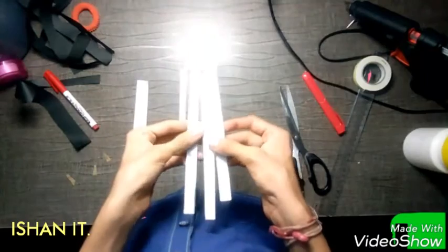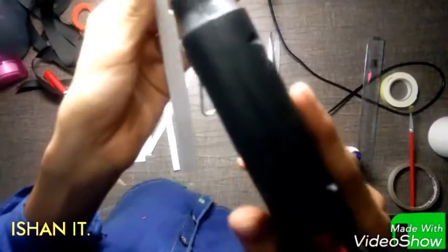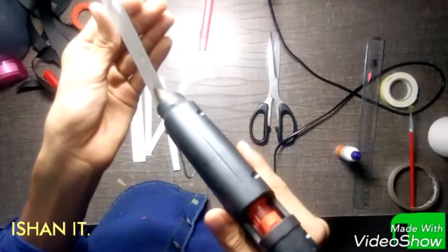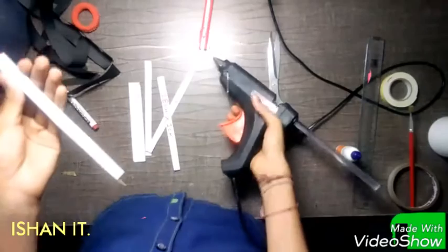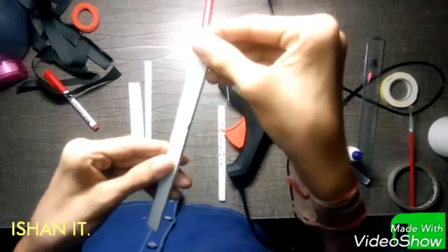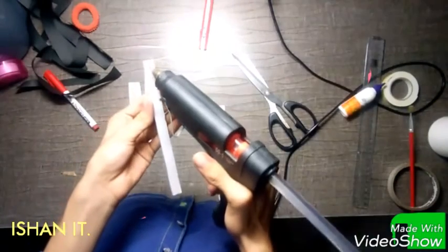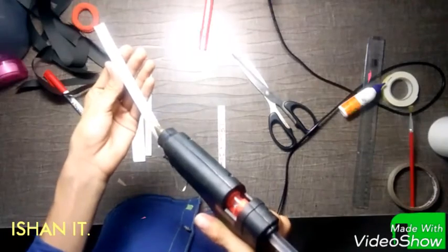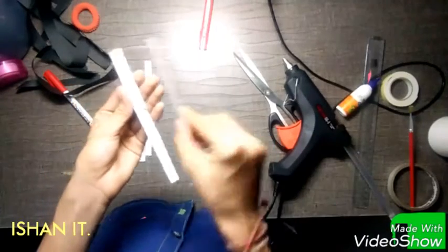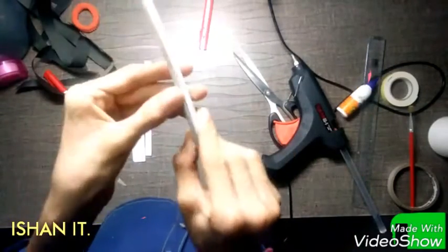We will take three of the pieces and join them with glue gun. So we will start applying glue on this stick, and we have stuck the three together.